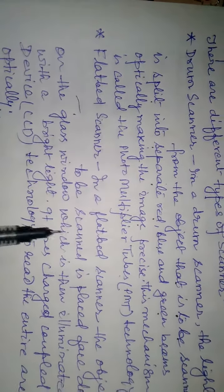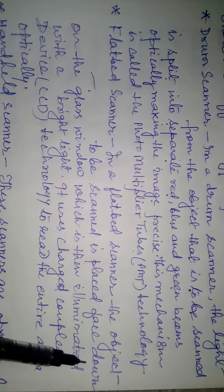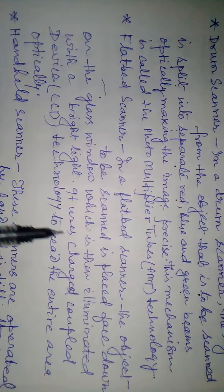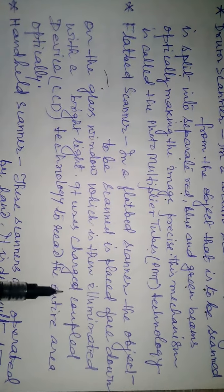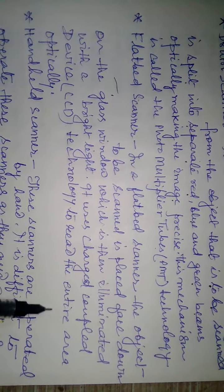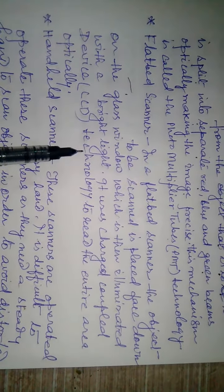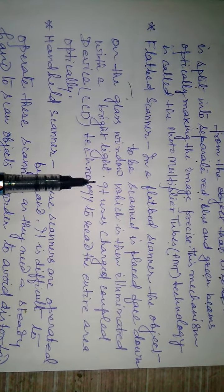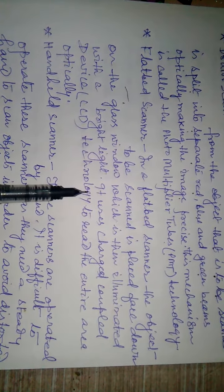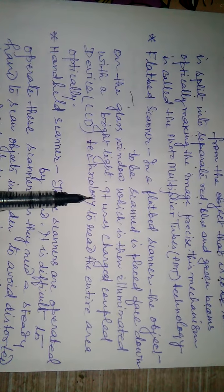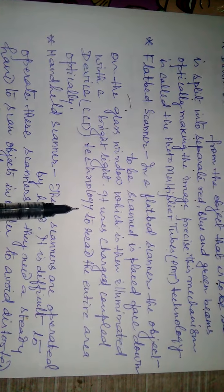Flatbed scanner. In a flatbed scanner, the object to be scanned is placed face down on the glass window, which is then illuminated with a bright light. It uses charged coupled device technology to read the entire area optically. It looks like a miniature printer with a flip-up cover protecting the glass window. It is used to scan books, newspapers, articles, and photographs.